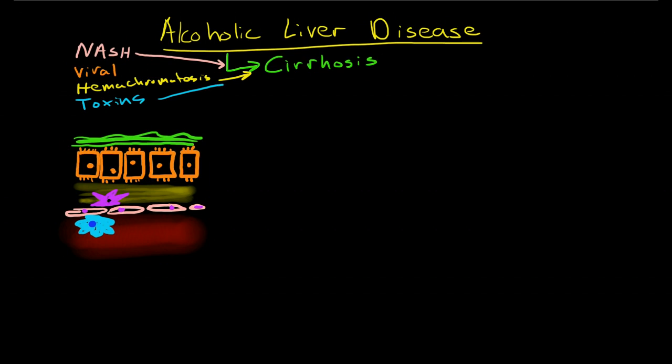And they share many aspects of the pathophysiology in common. And the major thing that they share in common is that there is inflammation of the liver, and in particular, inflammation in the space of Disse.